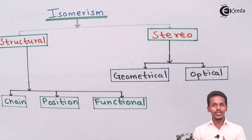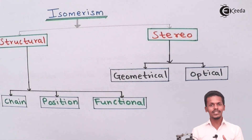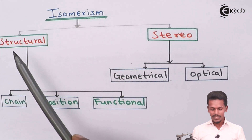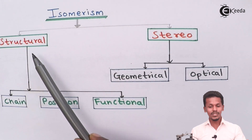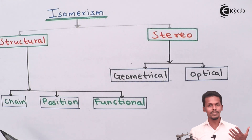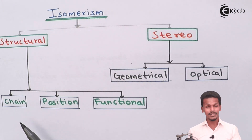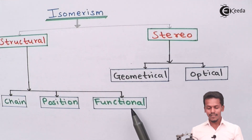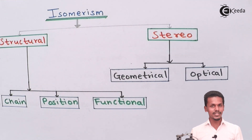These are the two differences between structural and stereo isomers. We are going to talk about this in a very deep manner, but first let us talk about the types of structural isomers. Structural isomerism is basically divided into three parts: chain isomerism, position isomerism, and functional isomerism.